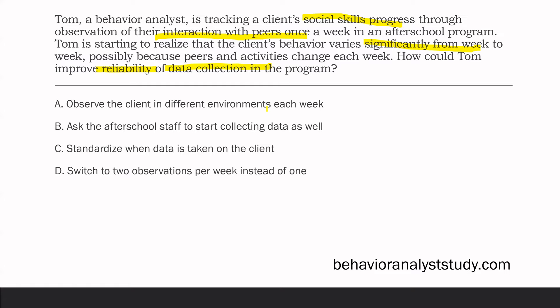C: standardize when data is taken on the client — this would be a good goal. If we can standardize the procedure and situation, getting the client with the same peers and same activities, then we can isolate the behavior so it isn't changing as much. D: switch to two observations per week instead of one — you're still collecting data during a situation where variables are constantly changing. Peers are changing, activities are changing — that's the problem. The best solution is to standardize when data is taken on the client.